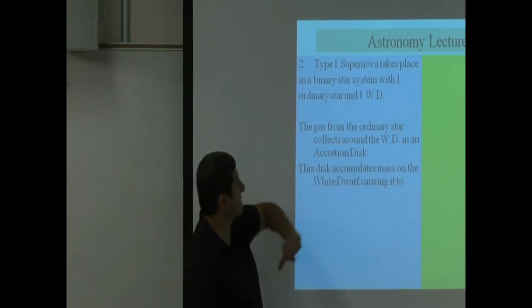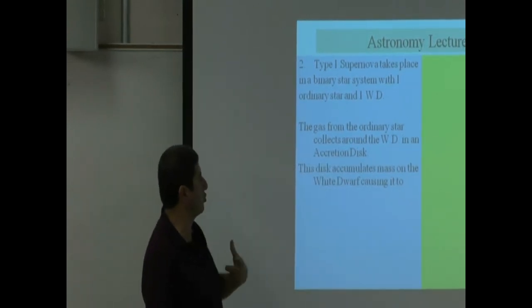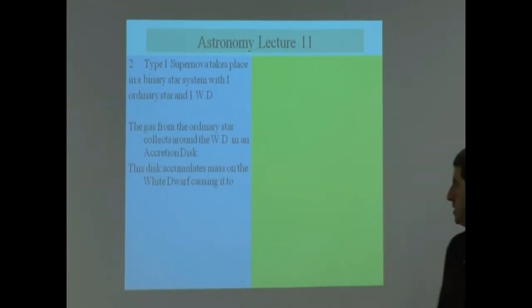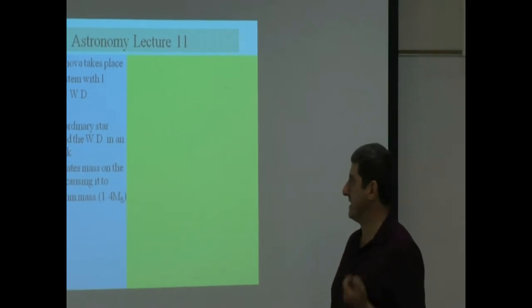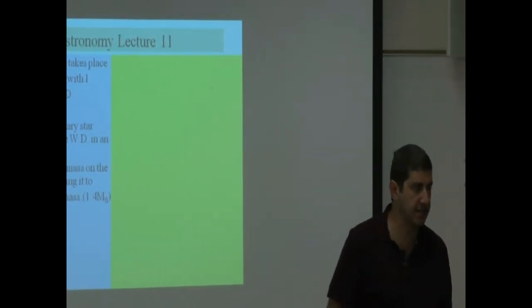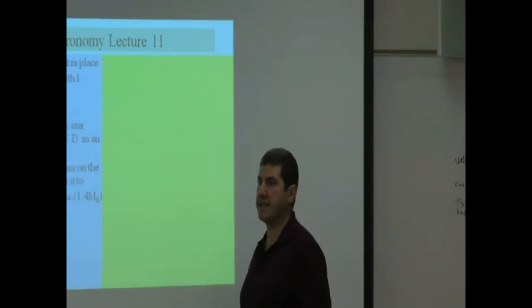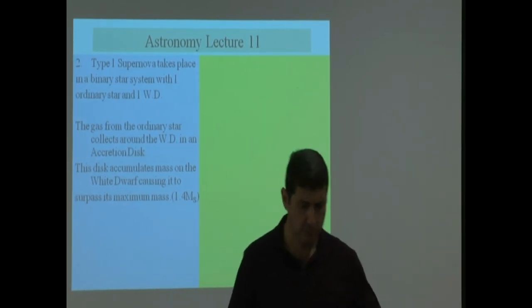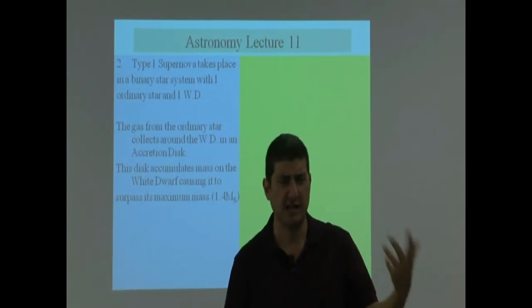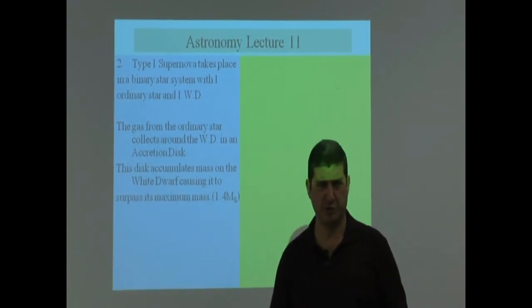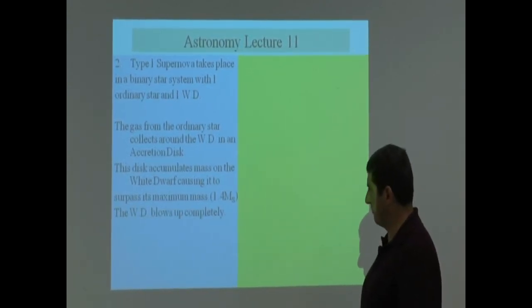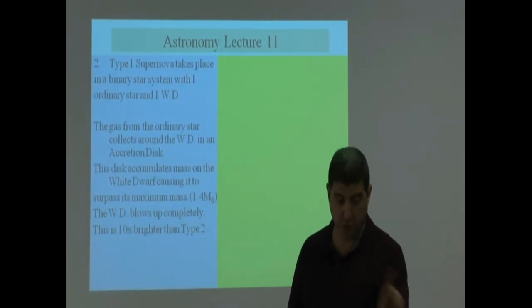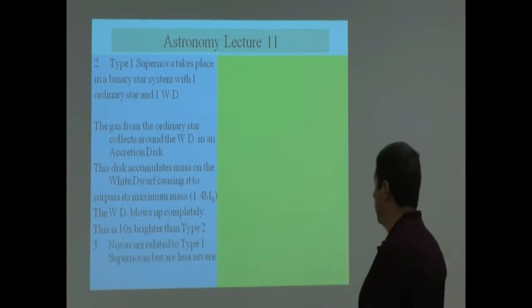The disc, so here's what happens. The gas from the ordinary star collects around the white dwarf. This disc accumulates mass on the white dwarf, causing it to surpass its maximum mass. The maximum mass it can have is 1.4 times the mass of the sun. A white dwarf cannot have more mass than that, for reasons that are very complex, and we don't need to go into that. The white dwarf blows up completely. This is 10 times brighter than the Type 2. We expect it to be brighter, we said, because two stars are dying.